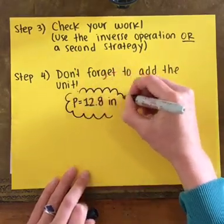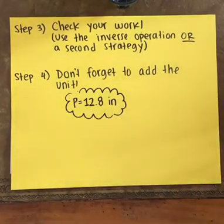Now you're done using decimal addition and multiplication to find the perimeter of a rectangle.